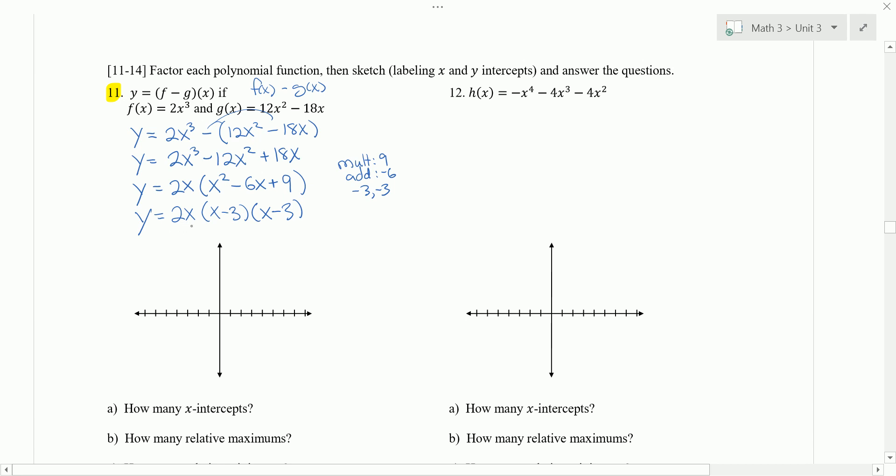So if we set x equal to 0, we get x is 0. We set x minus 3 equal to 0. We get x is 3. We get another one here. So double multiplicity. So at 3, it's going to bounce.